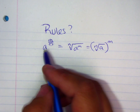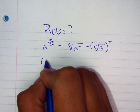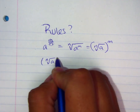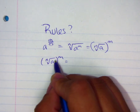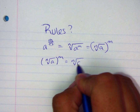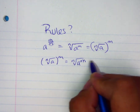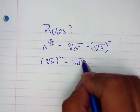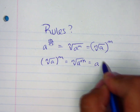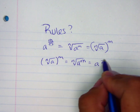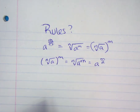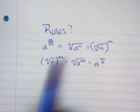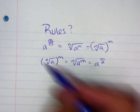Going backwards is the same rule in reverse. If you're given a root raised to another power, recall that the power could also be inside. We can then rewrite this as a fraction exponent where the denominator is your root and the numerator is your other exponent inside. It's the same rule, just going from one form to the other and back.